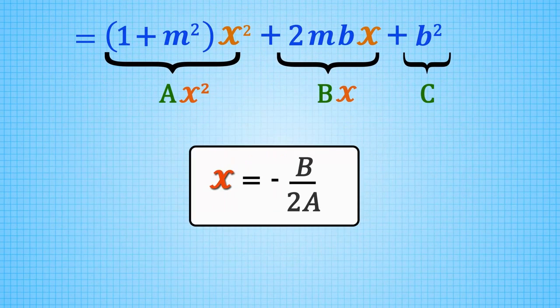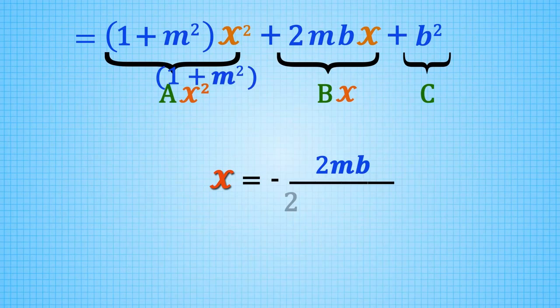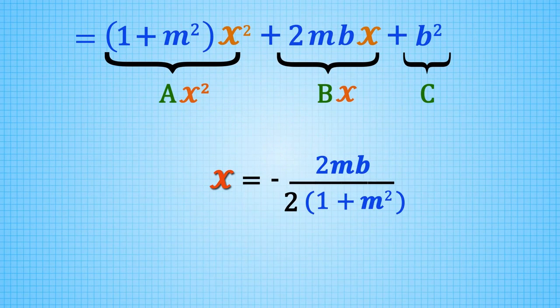In our case, the minimum is achieved at x equals negative 2mb over 2 times 1 plus m squared, or just negative mb over 1 plus m squared.